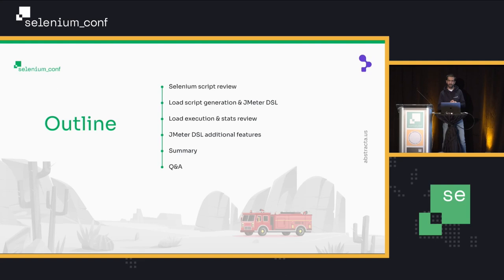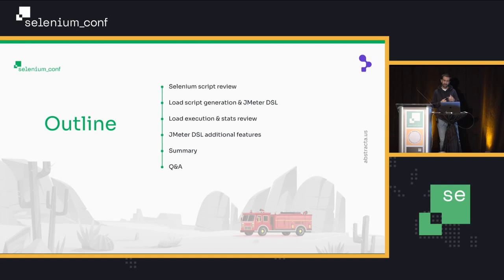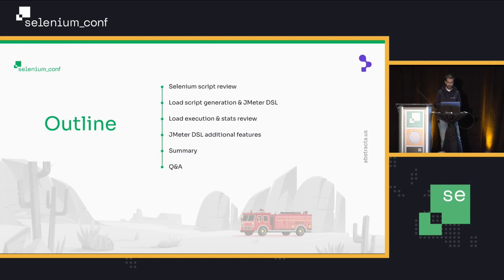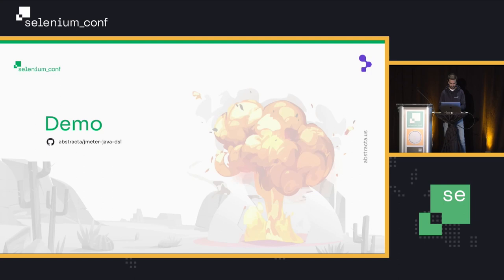Here is the outline. We are going to review a Selenium script so you know what the application under test is about. Then we are going to generate a load testing script using the JMeter DSL tool. After that, we are going to execute some load and review some statistics. Then we'll briefly review some additional features of JMeter DSL and wrap up with a summary and Q&A.